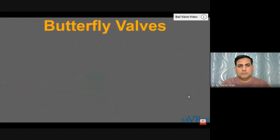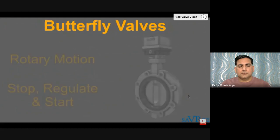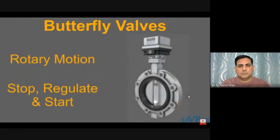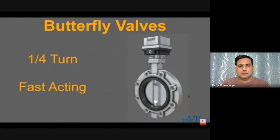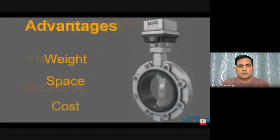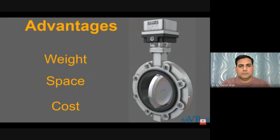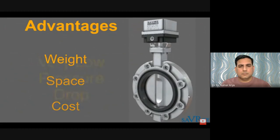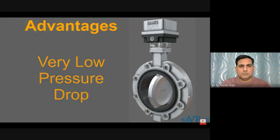A butterfly valve is a rotary motion valve used to stop, regulate, and start flow. Like all quarter-turn valves, it is fast-acting, and large butterfly valves employ planetary-type gearboxes. Butterfly valves have many advantages over gate, globe, plug, and ball-type valves, especially for larger applications, with obvious savings in weight, space, and cost. The pressure drop when fully open is low, and butterfly valves are very well suited for handling large flows of liquids or gases at relatively low pressures.